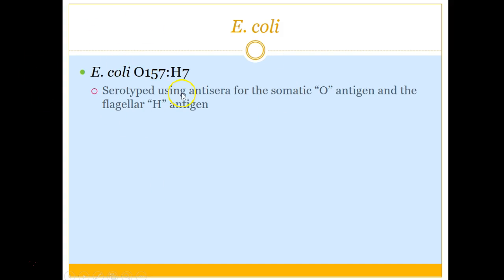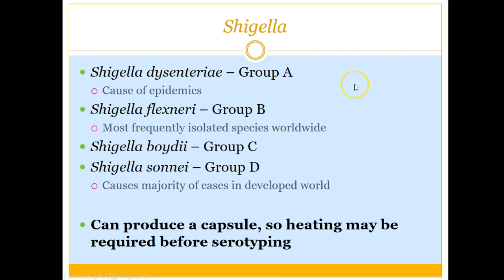E. coli O157:H7 — the O and H designations are part of the serotyping process used to narrow it down to this specific serotype that's causing the issue.